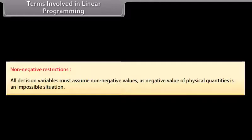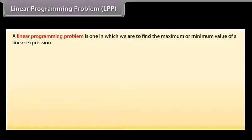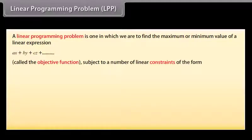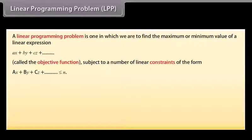Non-negative restrictions: All decision variables must assume non-negative values, as negative values of physical quantities is an impossible situation. Linear programming problem LPP: A linear programming problem is one in which we are to find the maximum or minimum value of a linear expression, AX plus BY plus CZ plus and so on, called the objective function.